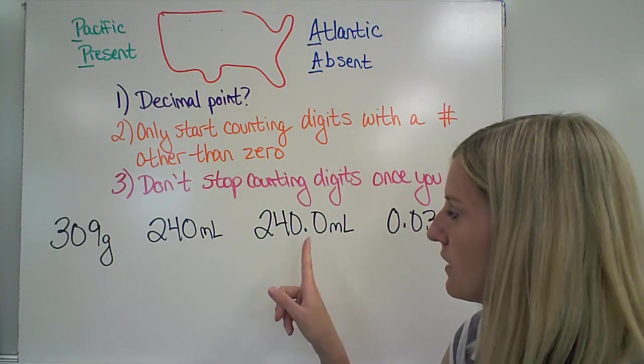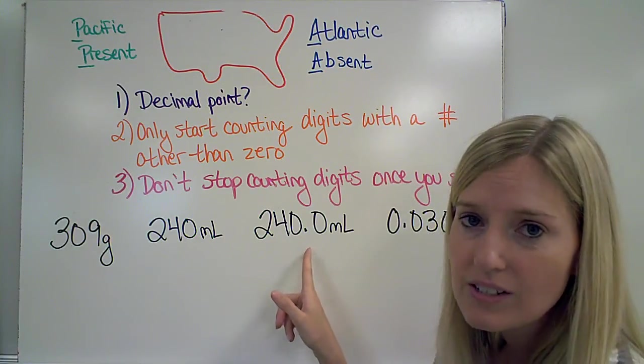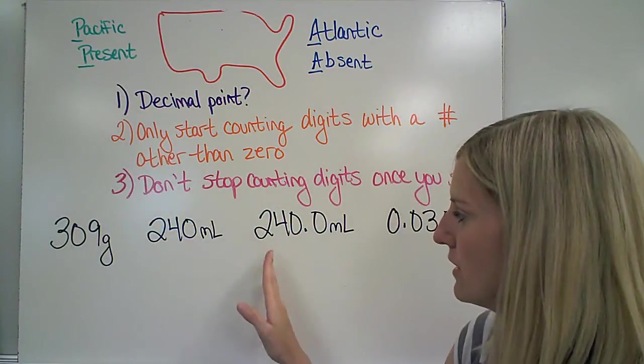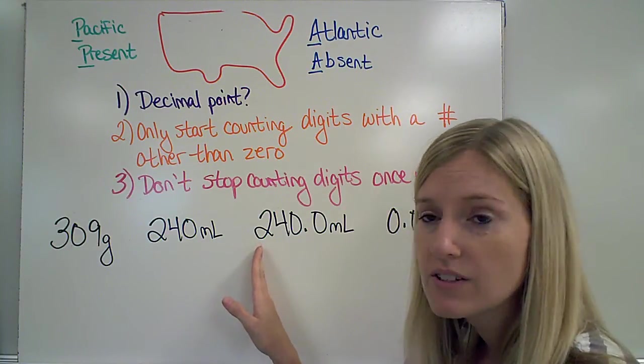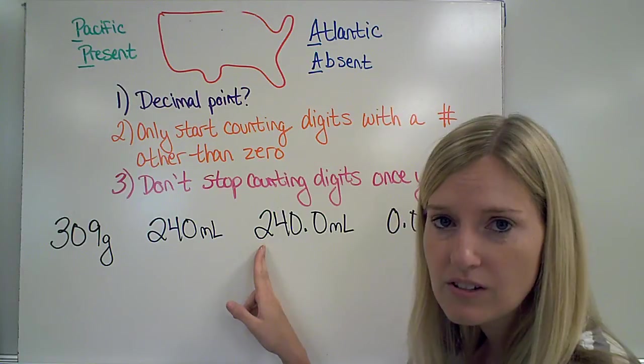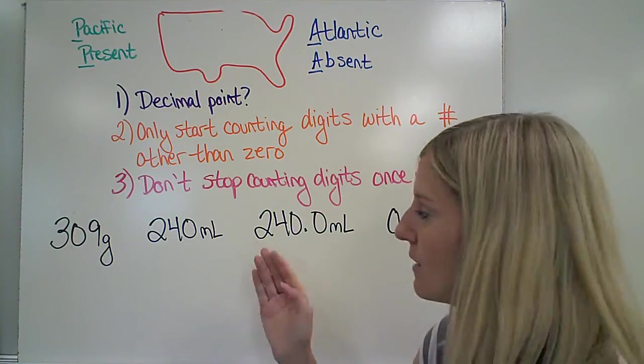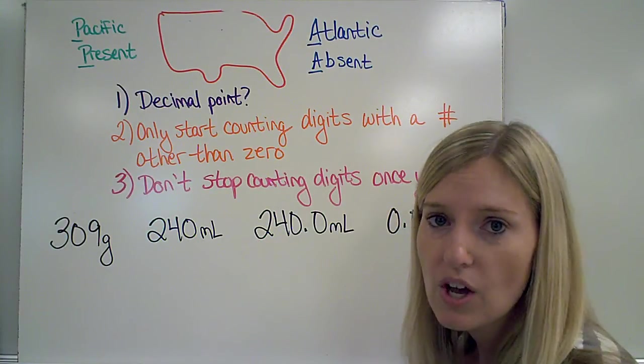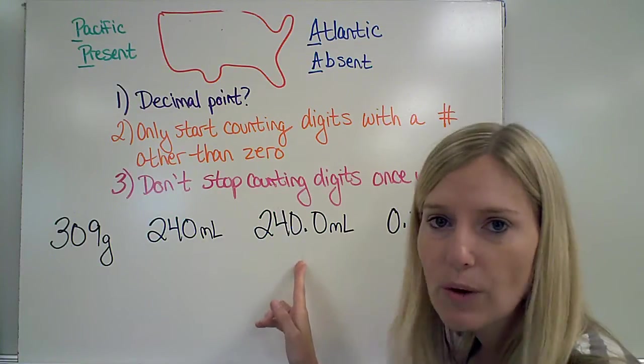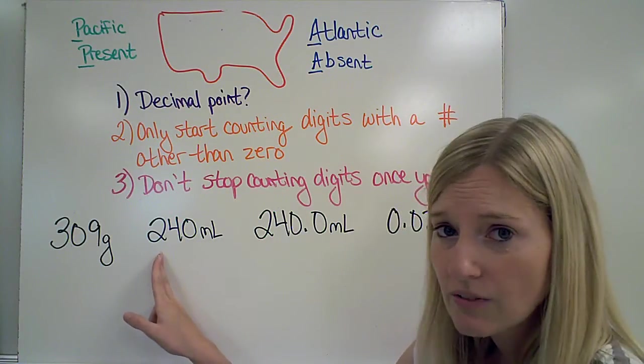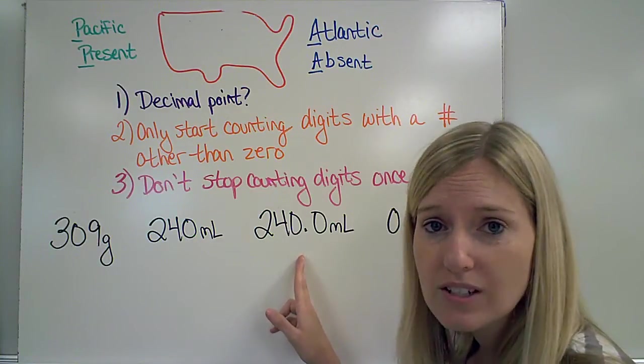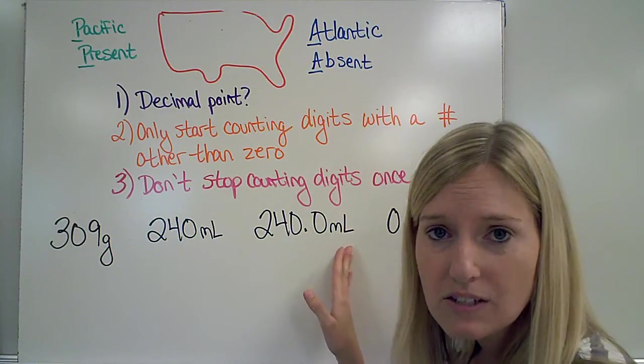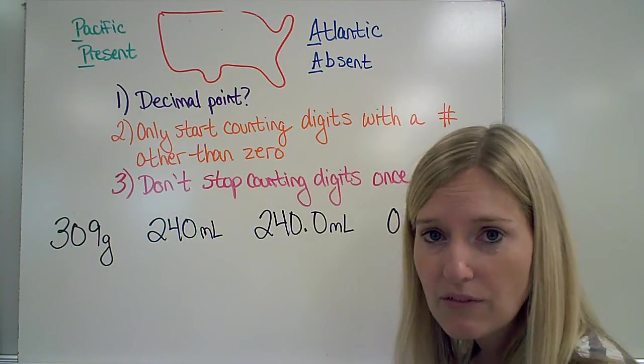Let's look at this number. This number has a decimal point, so the decimal point is present. That means I need to start counting on the left-hand side of the number, starting with a number other than 0. My first digit is a 2, which is a number other than 0, so I can count that. I'm going to count that all the way to the end. So, I count 1, 2, 3, 4 significant figures. Notice that these two numbers are the same. They're both 240. This one only had 2 significant figures. This one has 4 significant figures. Whether or not there's a decimal point, and depending on how many 0s come after that decimal point, makes a large difference in the number of significant figures.